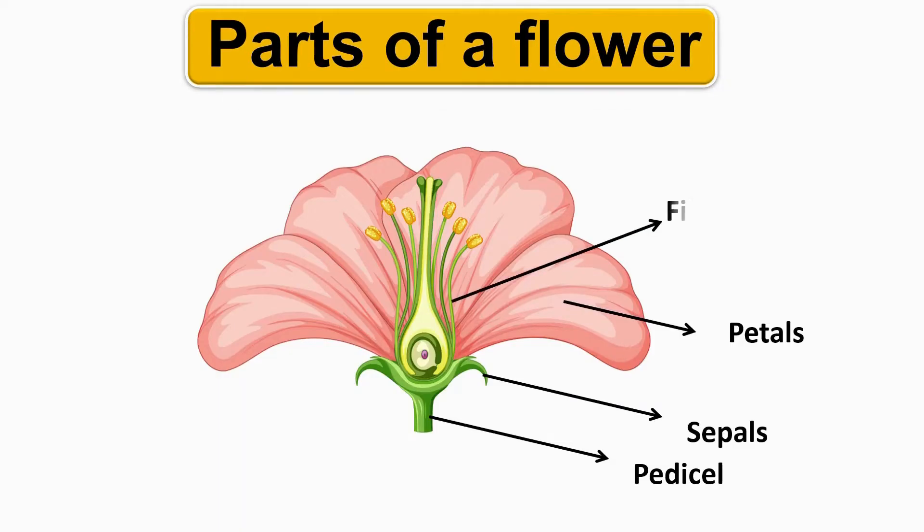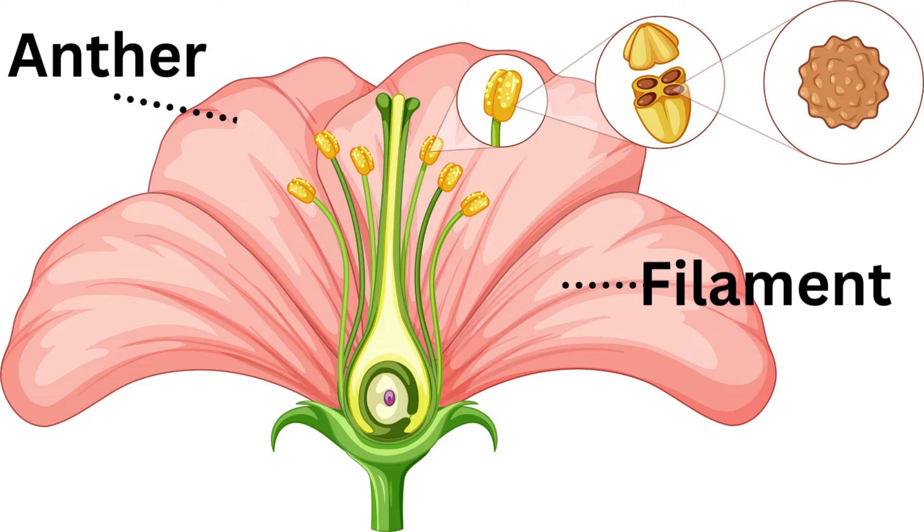Stamen, the pollen producing part of a flower, usually with a slender filament supporting the anther. Anther, the part of the stamen where pollen is produced.